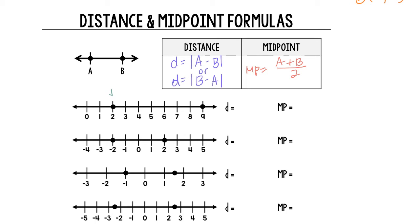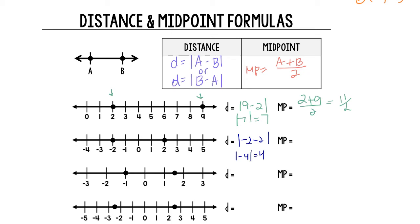Our first points are at 2 and 9. The distance is the absolute value of nine minus two, or the absolute value of 7, which is just 7. The midpoint: we add the two points together and divide by 2, giving us 11 over 2. Next example: the distance between negative two and two in absolute value is the absolute value of negative four, which is 4 — or we just count the lines between them. The midpoint is negative two plus two over 2, which is zero over 2, or just zero.